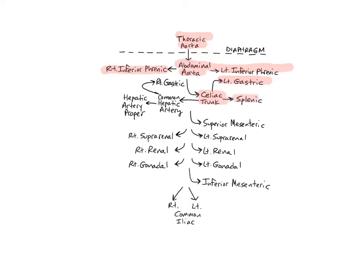The splenic artery is the largest branch of the celiac trunk, and branches off the left side just below the left gastric artery, then passes horizontally to the left along the pancreas. As its name suggests, it supplies the spleen, but it also branches off several other arteries that supply the pancreas, the greater curvature and fundus of the stomach — the fundus is the upper part of the stomach — and the greater omentum.